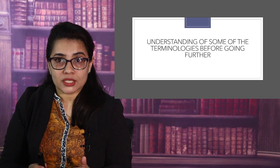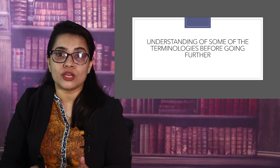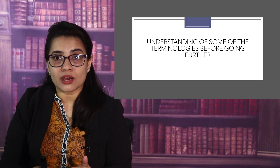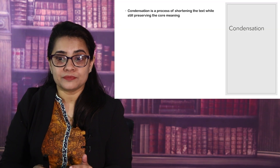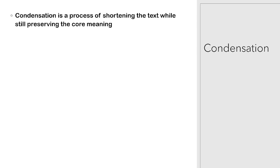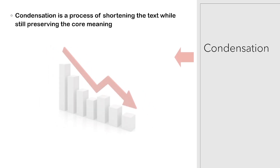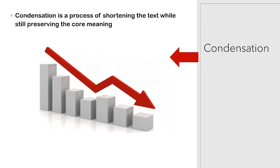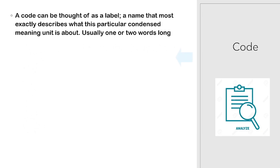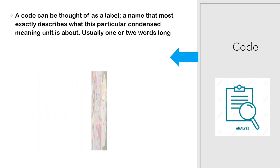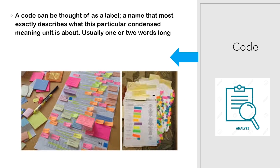Now I'm going to tell you some terminologies we need to understand before doing content analysis. The first terminology is condensation — condensation is a process of shortening the text while still preserving the core meaning. Then you also need to know what we call a code.